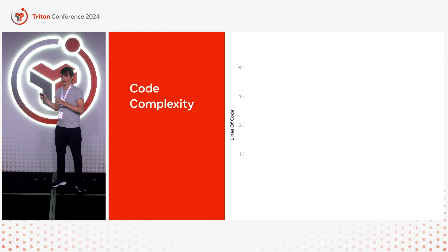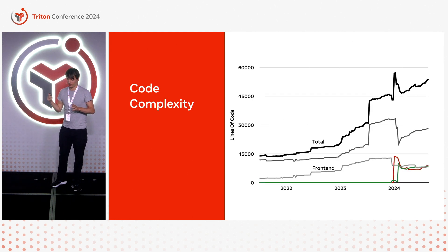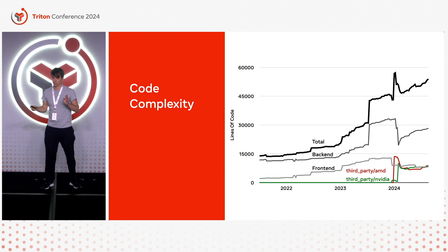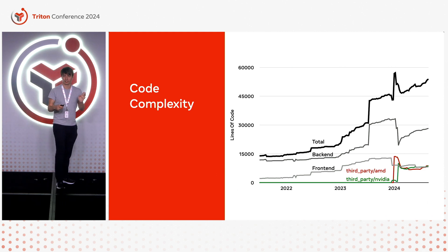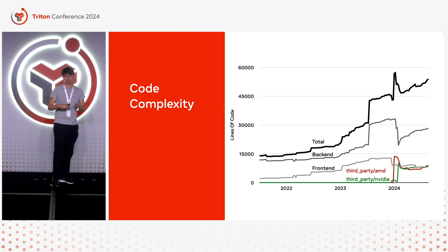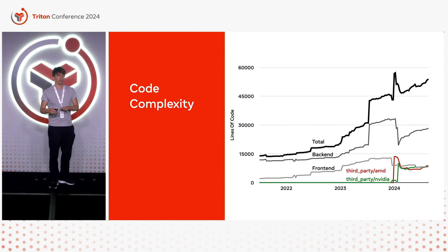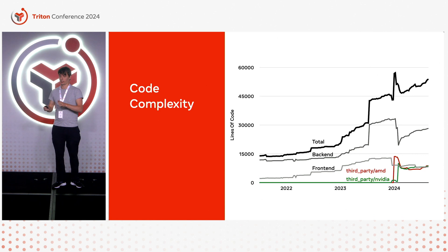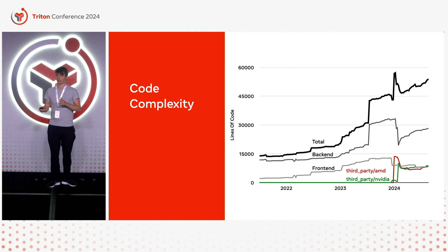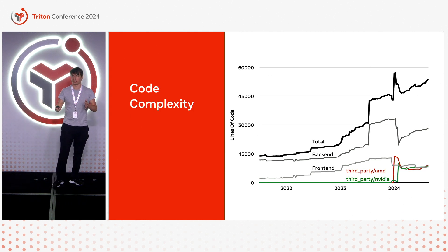Another thing I was super unhappy about last year is code complexity. The total number of lines of code had a very big bump between 2023 and 2024 — a very steep slope for a single year, which didn't bode well for how Triton would scale. So we've made the code base more modular so different parts can reuse more components and be developed independently. This has led to a substantial dip in core lines of code, with that code moved to third-party backends that can be developed pretty independently from core infrastructure.